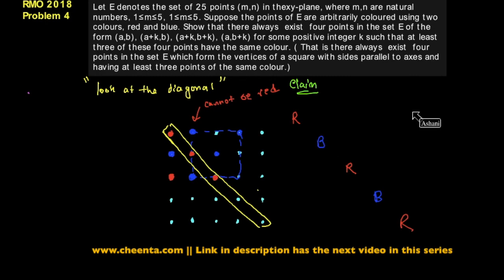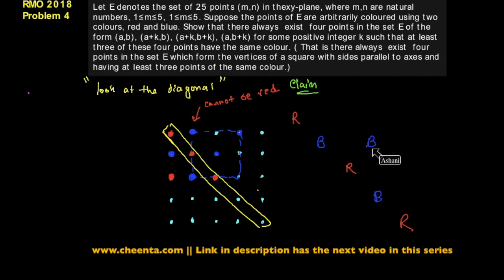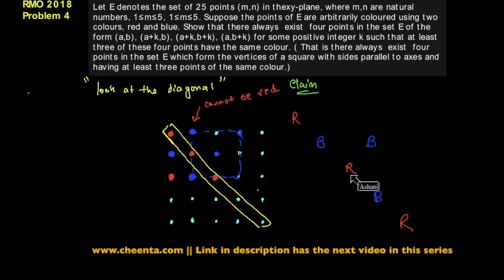Now let's look at the other diagonal. The same rule holds for the other diagonal as well, which means both of these two vertices cannot be red. So one of these two vertices has to be blue. And we have failed the game, because that square will have three blue vertices. The middle one is red, so both adjacent ones cannot be red — one must be blue — and whichever one is blue, we fail the game. We found a square whose three vertices are of the same colour.